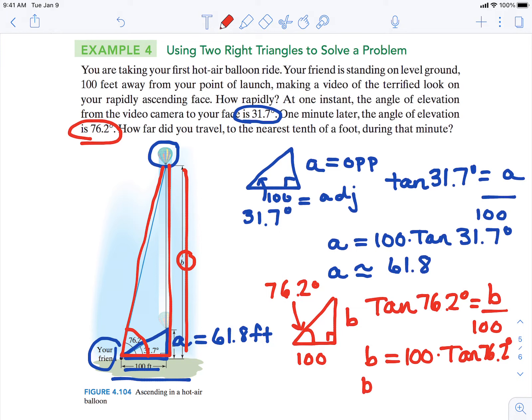Type it into our calculator. And our B value is about 407.1 feet. Now, it asks us how far did you travel to the nearest tenth of a foot during that one minute.